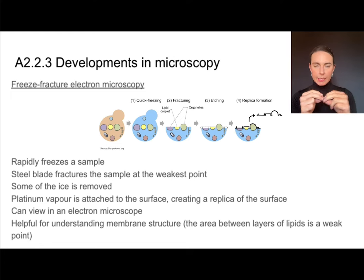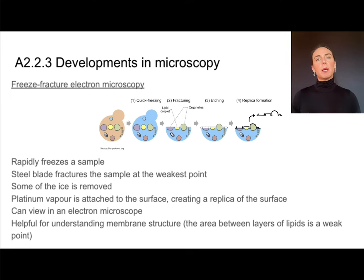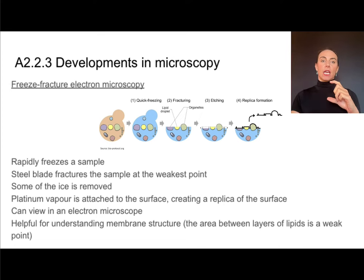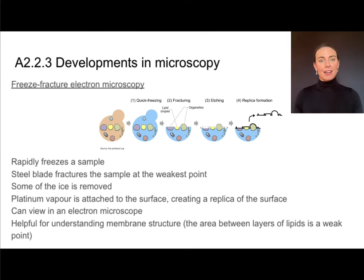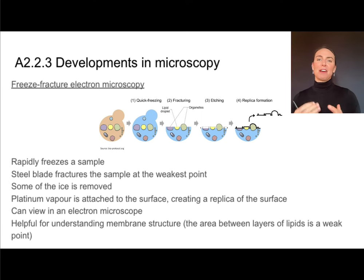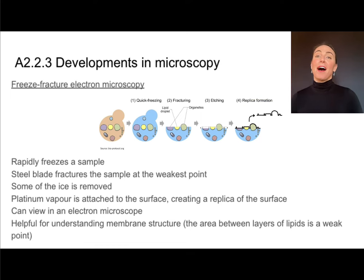Sometimes it's not the molecular content we want to see but the actual three-dimensional structure. For this, you might use freeze fracture electron microscopy — and it's exactly what it sounds like. You rapidly freeze a sample, then use a steel blade to fracture it, and it breaks apart at its weakest point. You remove some of the ice, and then a vapor attaches to the surface, creating a replica that you can view in an electron microscope. This is really helpful for understanding things like membrane structure.